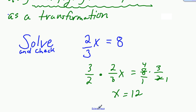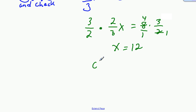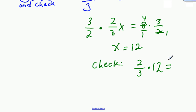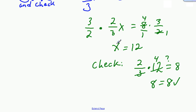Let's check that since this one's a little more involved. It's 2 thirds times 12 — does that equal 8? We cancel the 3 into 12, leaving 4, so it's 2 times 4, and we do get 8 equals 8. So that's checked out properly and we get x equals 12.